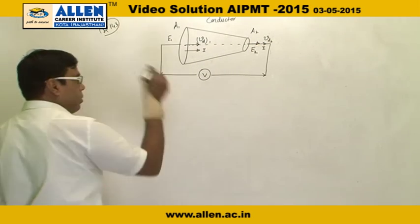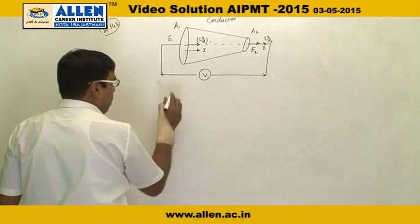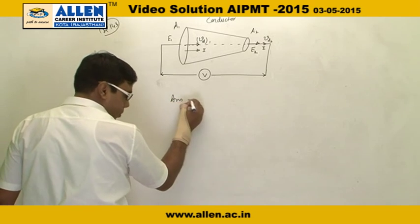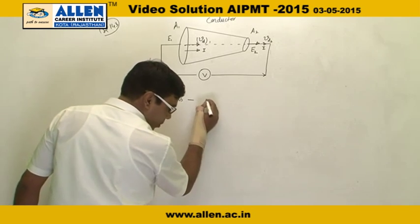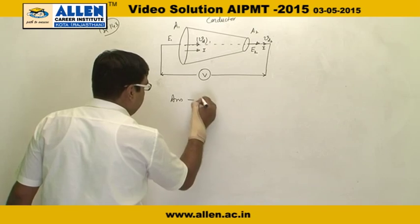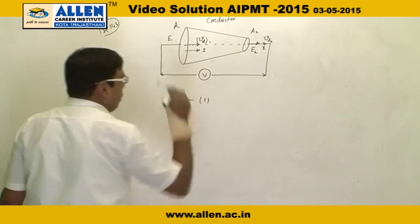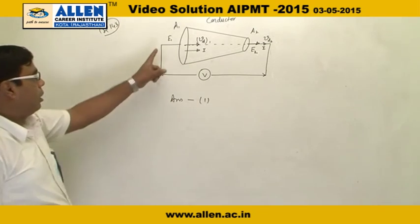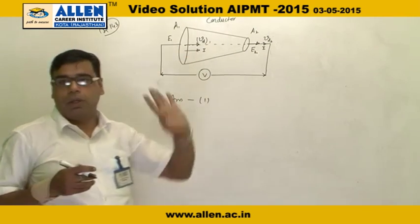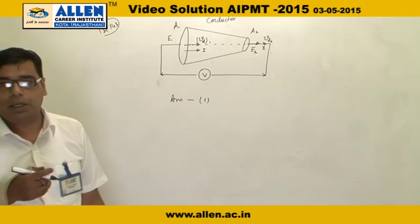So, as per the question, the answer is: current is the quantity which remains constant throughout the flow in the conductor.